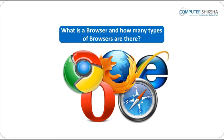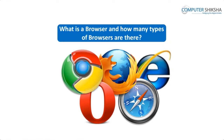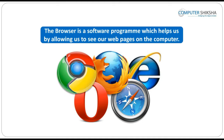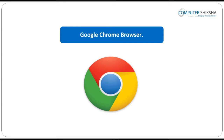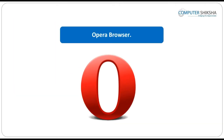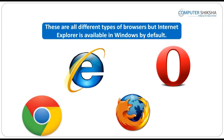What is a browser and how many types of browsers are there? A browser is a software program which helps us see web pages on the computer. It helps connect the computer to the internet so that the user can surf the internet. Browsers are of many types — like Internet Explorer, Google Chrome, Mozilla Firefox, and Opera. Internet Explorer is available in Windows by default.